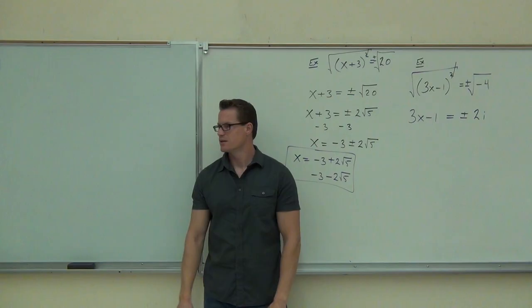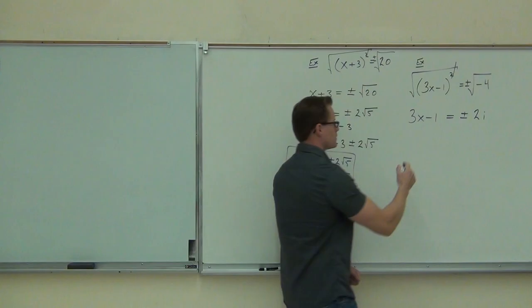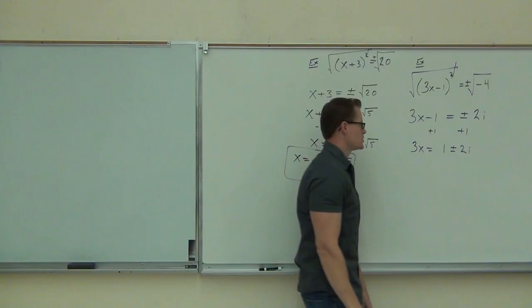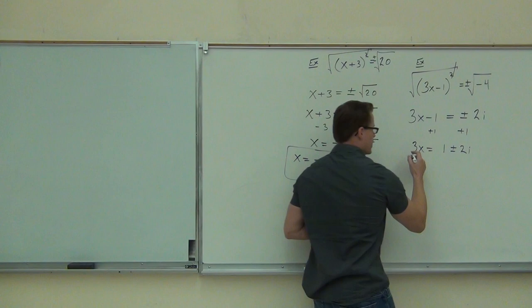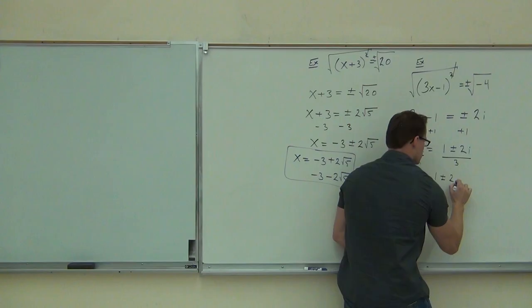We're not done — we need to solve for x. Add 1 to both sides: the 1 can't be added to the 2i, so we have 3x equals 1 plus or minus 2i. Then divide by 5... divide by 3 to get x by itself. We have x equals 1 plus or minus 2i over 3.